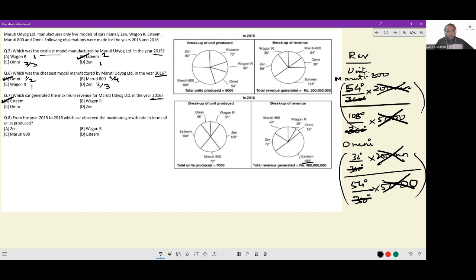Okay, next. From the year 2015 to 2016, which car observed the maximum growth rate in terms of units produced? Now, comparing fractions or comparing degrees would not work, because now I would need to have precise values and everything done here. I would need precise values because the totals here are not comparable.